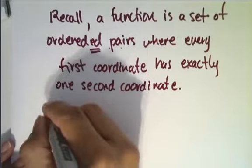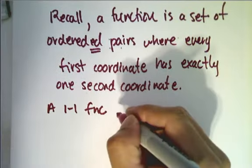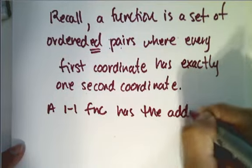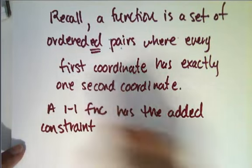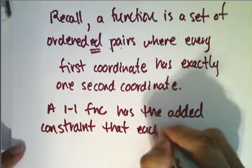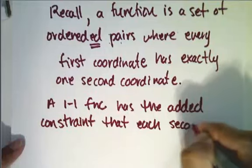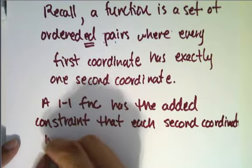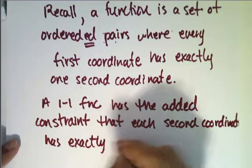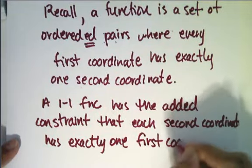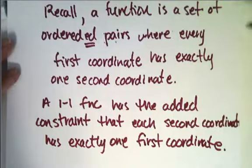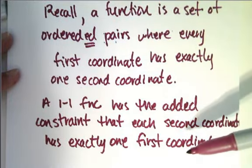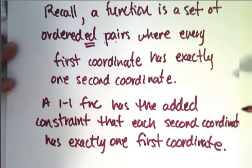A one-to-one function is a function, so it satisfies that first piece, but has the added constraint that each second coordinate has exactly one first coordinate. So a function is a set of ordered pairs such that every first coordinate has exactly one second coordinate, and a one-to-one function adds the constraint that every second coordinate has exactly one first coordinate.